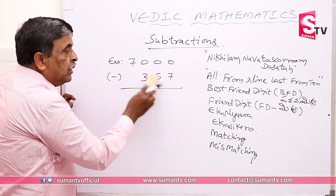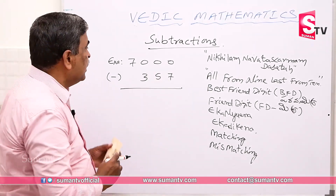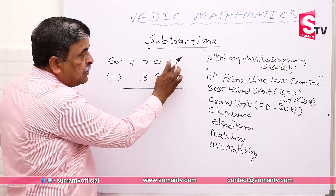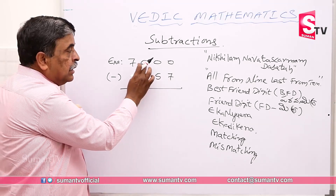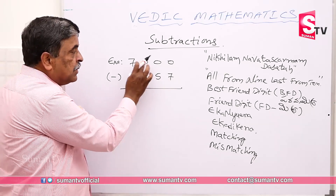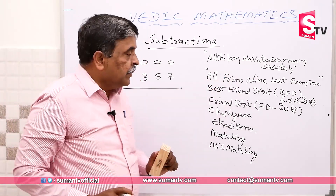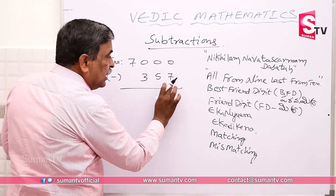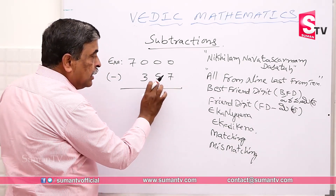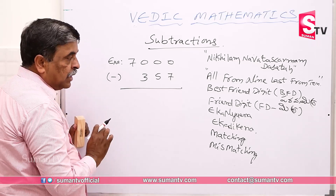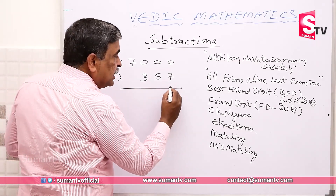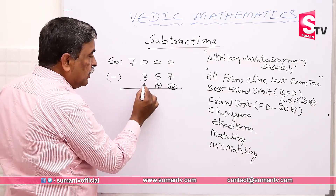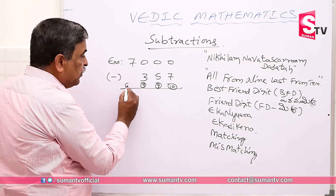Only in the mismatch case, we apply this. This is the bigger digit, this is the smaller digit. Now we apply: from the top, all from 9, last from 10. This is the last from 10, this is the all from 9. We apply this across each position. The result is shown as an 11-digit output.